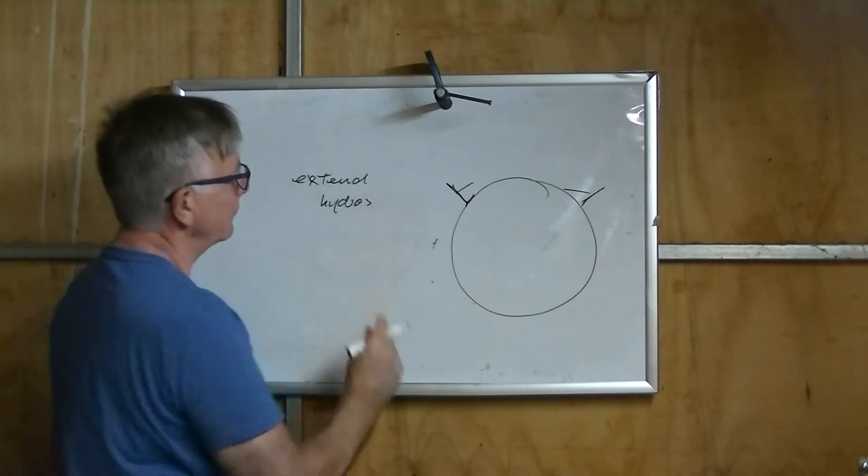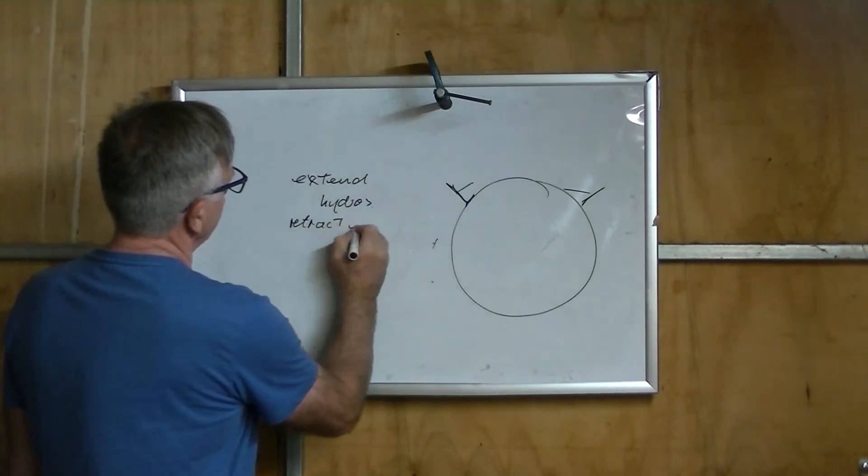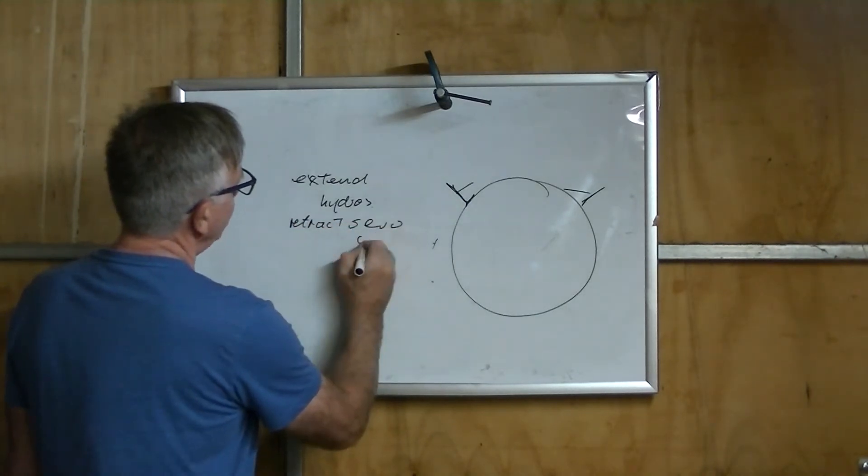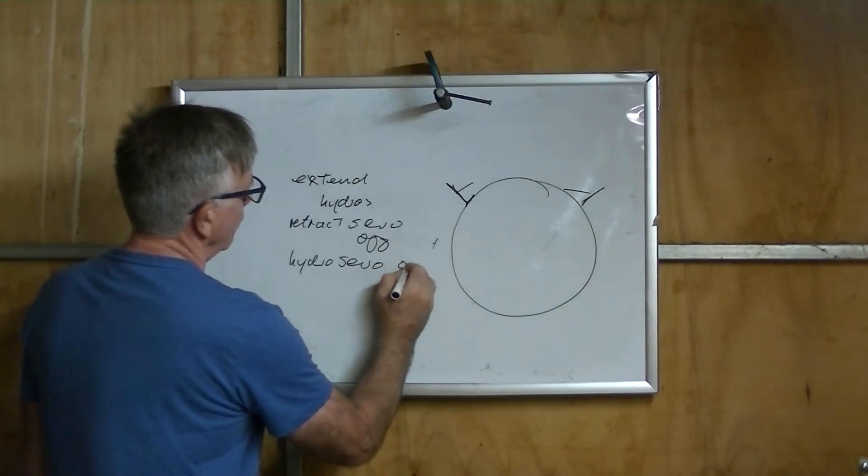So I want the default position to be open and I want the retract servo off. And I want the hydro servo on. So all of that I can do with a bit of code.